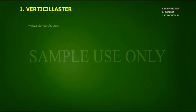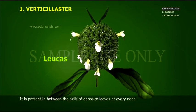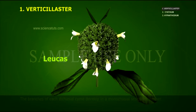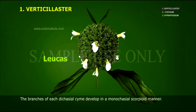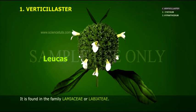Verticillaster. It is present in between the axils of opposite leaves at every node. In the axils of each leaf, initially a dichesial cyme develops. The branches of each dichesial cyme develop in a monochasial, scorpioid manner. The flowers are sessile or subsessile and are crowded around the node like a false whorl. It is found in the family Lamiaceae or Labiaceae.